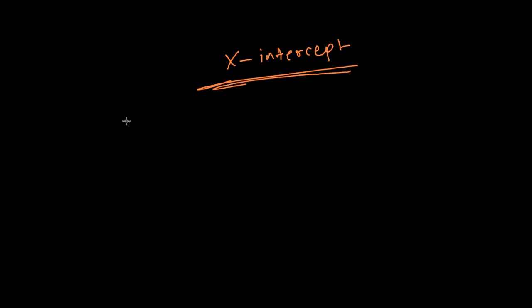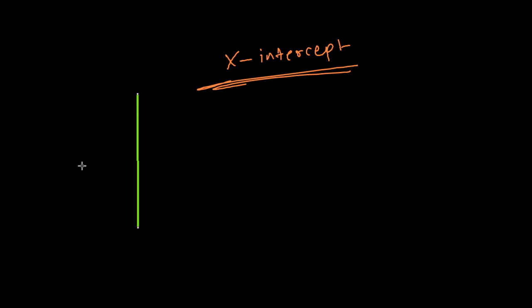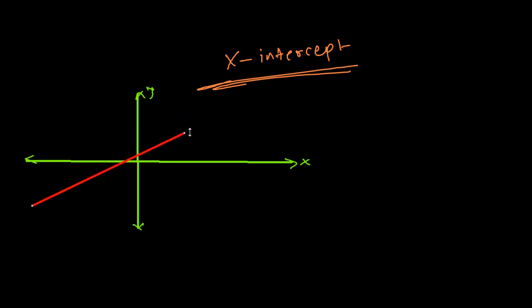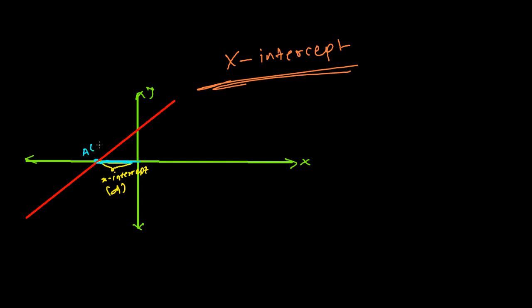Let me first draw the basic figure. This is our y-axis and this is our x-axis — this is the positive y-axis. Now our line is making an x-intercept, so the line looks something like this. This is our line making some x-intercept. Let's say this x-intercept is d — the total length to that point is d. So the coordinate of this point, let's call it point A, will be (d, 0).